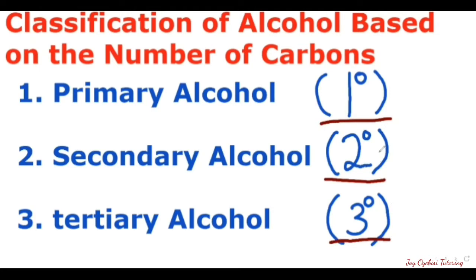How do you know if it is a primary alcohol? For primary alcohols, the carbon that is bearing the alcohol group would be attached to just one other carbon. That is how you know it is a primary alcohol.